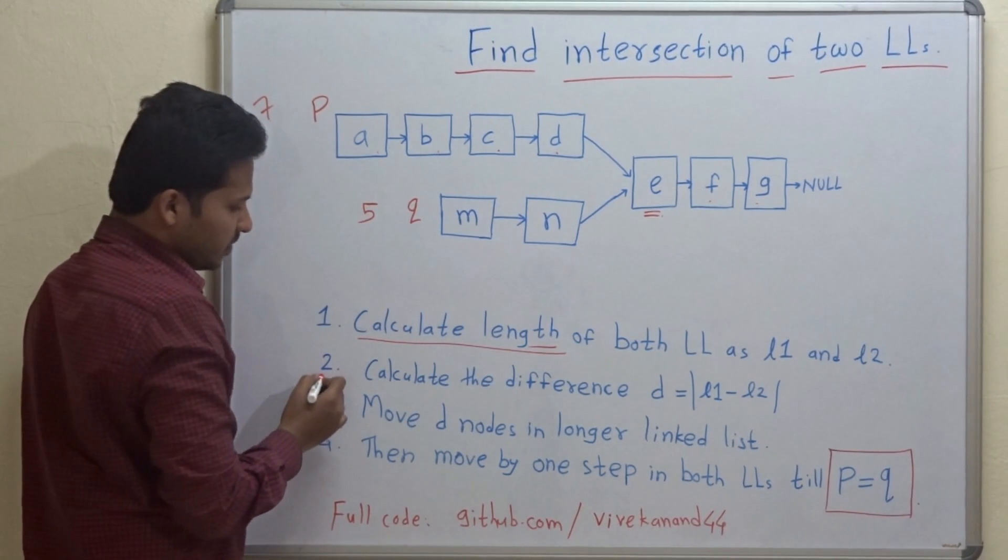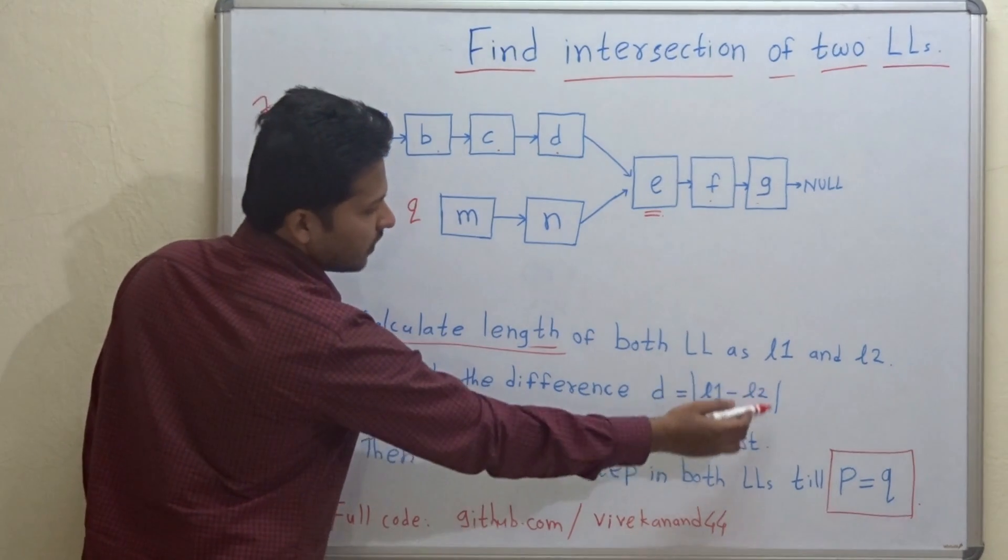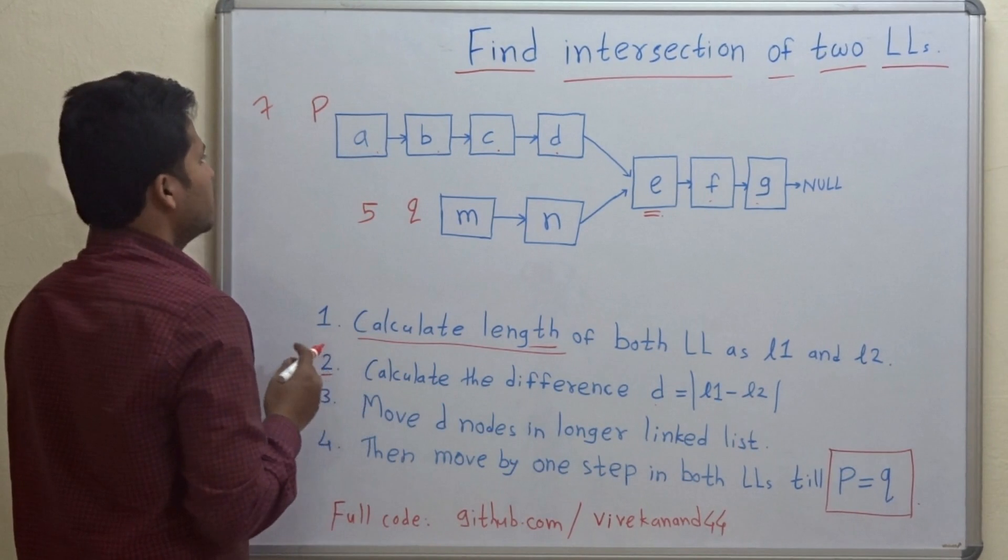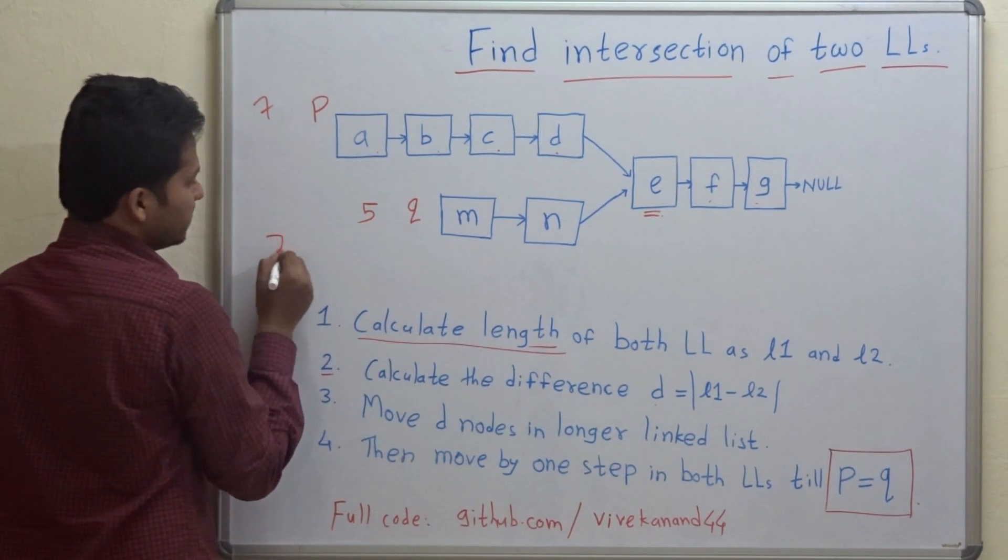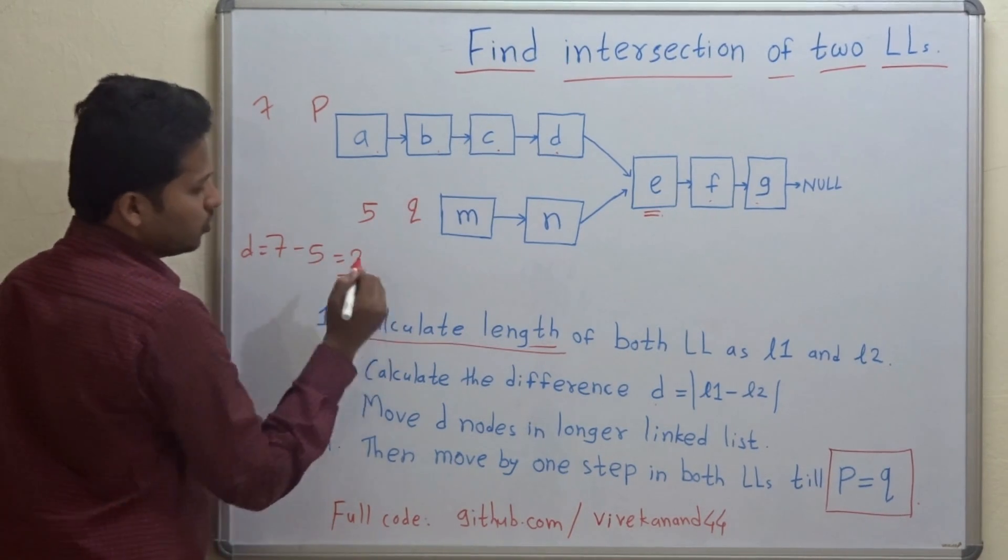Now the next step is calculate the difference. So D is equal to absolute value of L1 minus L2. Obviously, we have to do 7 minus 5, so D is equal to 2.